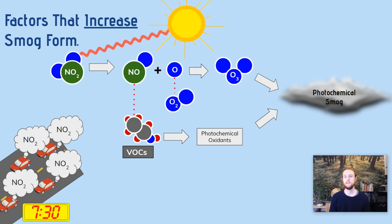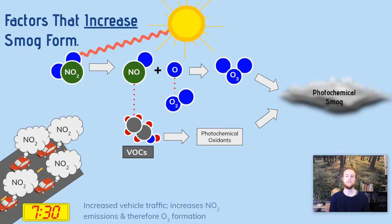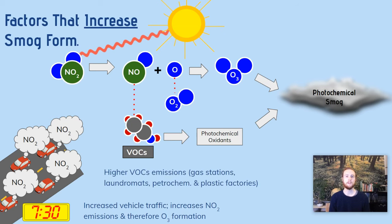Now we'll take a look at factors that increase the formation of photochemical smog. The first factor is increased traffic. Vehicles are one of the main sources of nitrogen dioxide, so when we increase the number of vehicles on the road, we increase smog formation. Another factor is higher volatile organic compound emissions — urban areas with a lot of gas stations or industry involving petrochemicals are going to contribute to smog formation as well.